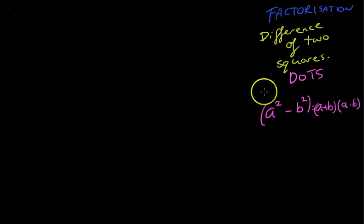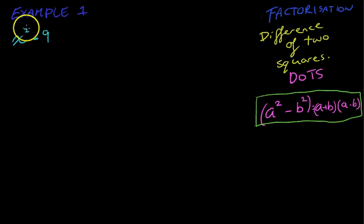Now this thing is really important, this is what the difference of two squares is all about. A squared minus B squared is equal to A plus B bracket times A minus B. You'll see this in action in our first example here. So we have X squared minus 9. This is a difference of two squares or DOTS for short.